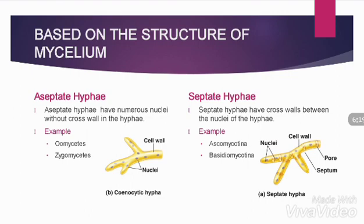There are two types of septa: the primary septa and the adventitious septa. The primary septa are formed in association with mitotic or meiotic nuclear division and they separate the daughter nuclei. The adventitious septa are formed in the absence of mitosis or meiosis and occur especially in association with changes in the local concentration of the cytoplasm.